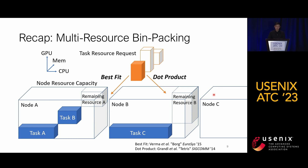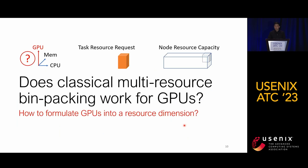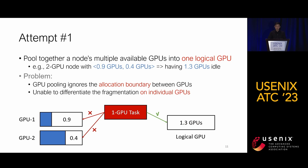However, formulating GPUs as a typical resource dimension in multidimensional bin packing is problematic. We show two attempts at this formulation and demonstrate both fail. The first attempt is to pool one node's multiple available GPUs into a single logical GPU resource. For example, a node with two GPUs at 90% and 40% capacity would be viewed as having 1.3 GPUs available in aggregate. However, this approach fails for two reasons: first, a task can rarely harvest compute or memory from different GPU devices, so the node can still fail to host a one-GPU task; second, the unified view makes it unable to differentiate fragmentation on individual GPUs.